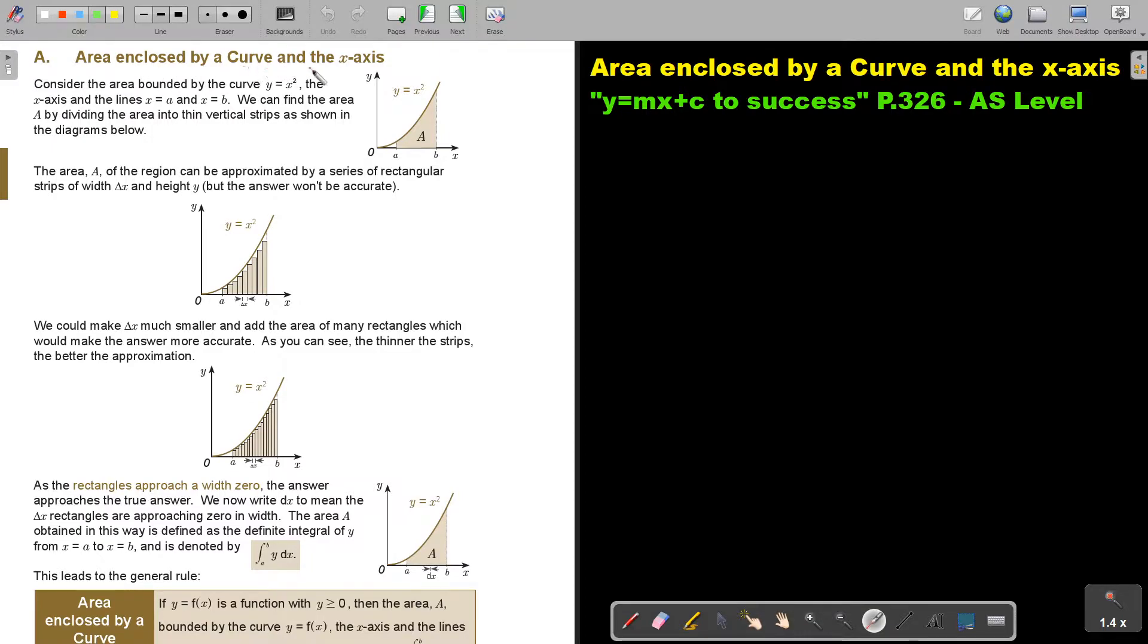Area enclosed by a curve and the x-axis. Consider the area bounded by the curve, this is the curve, y equals x-squared. The x-axis, there's the x-axis, and the lines x is equal to A, there, and x is equal to B.